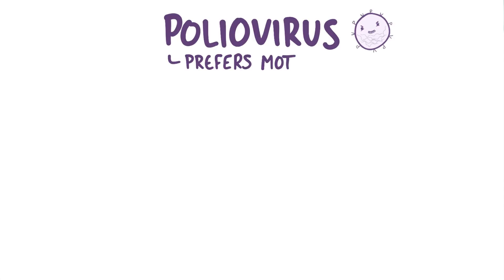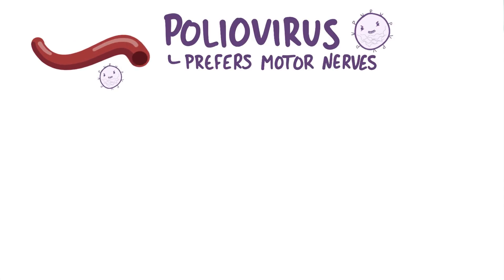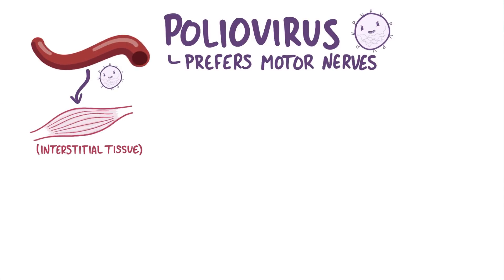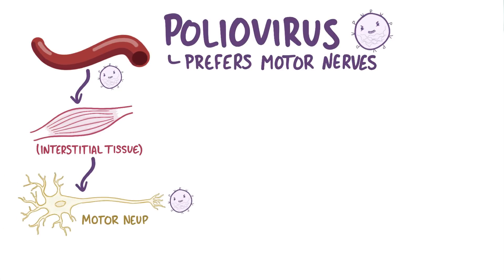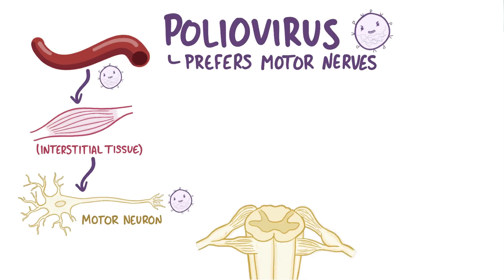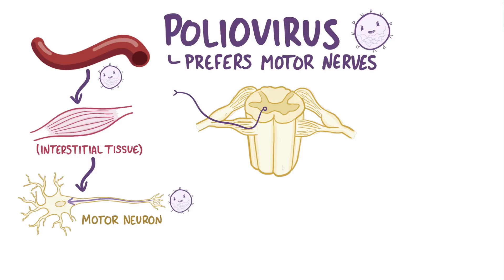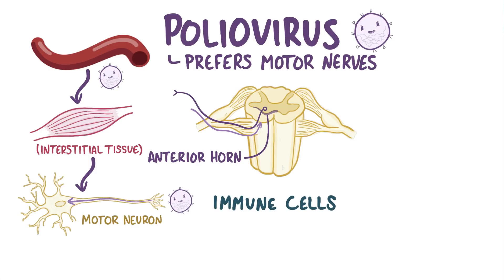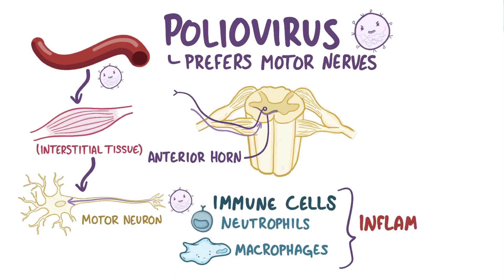Poliovirus prefers to infect motor nerves, so oftentimes it will leave a blood vessel and get into the interstitial tissue of muscle. From there, poliovirus invades the motor neuron and travels retrograde, meaning backwards up through the axon, to the anterior horn of the spinal cord. Infected motor neurons attract immune cells like neutrophils and macrophages, which cause inflammation and damage to the spinal cord.